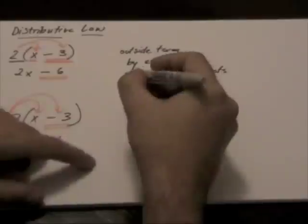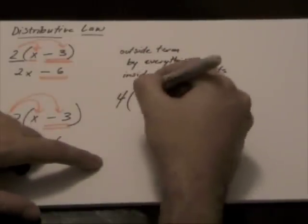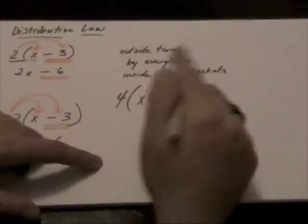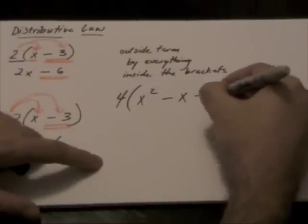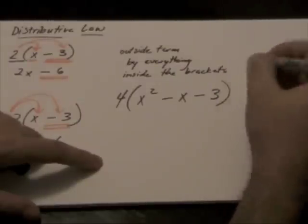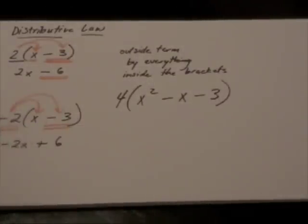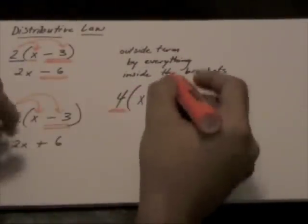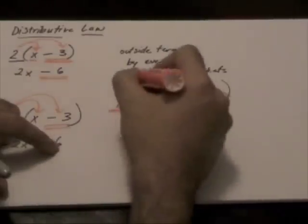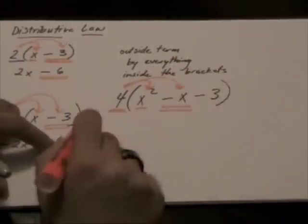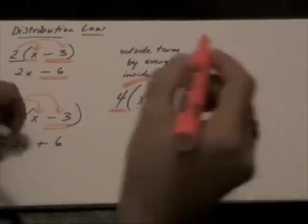Let's look at one more example here. We are going to use 4 multiplied by x squared minus x minus 3. Notice how within our brackets we have 3 terms, but still this 4 is being multiplied inside the brackets. It is going to be multiplied by x squared.